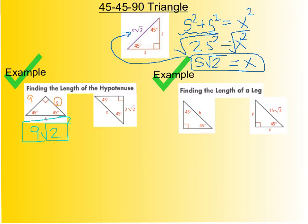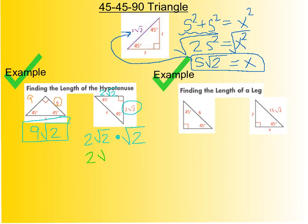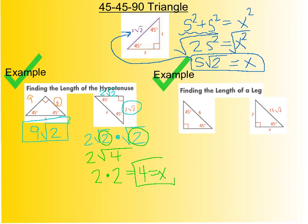In the next example, the leg given already has a radical in it — it's 2 radical 2. The other leg would also be 2 radical 2, but the hypotenuse is 2 radical 2 times radical 2. I need to multiply those radicals together: 2 radical 2 times radical 2 gives radical 4, and the square root of 4 is 2. So 2 times 2 equals 4, meaning x equals 4.